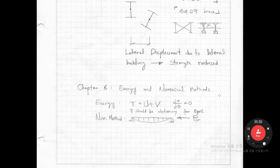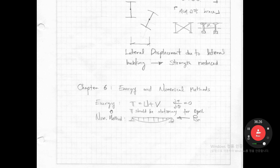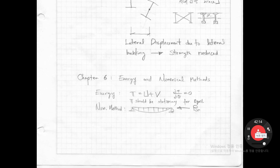Chapter six is energy and numerical method. The energy method uses total energy Pi, which equals the sum of internal and external energy. Taking the derivative of Pi should equal zero because Pi must be stationary for equilibrium. From this condition, we can obtain P_CR, the critical axial load. Another approach is the numerical method, where we divide the beam into several segments and use numerical methods to calculate P_CR. That concludes the first lecture — see you in the second lecture.